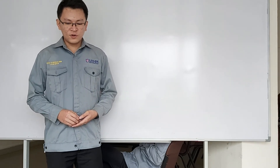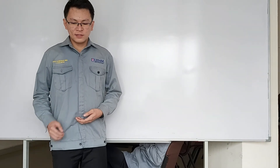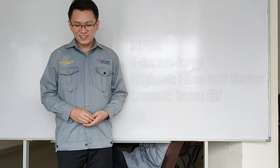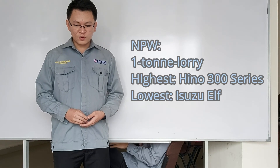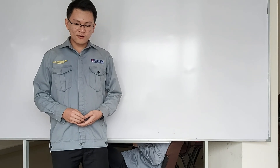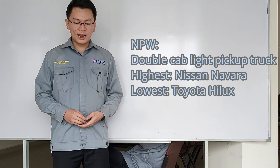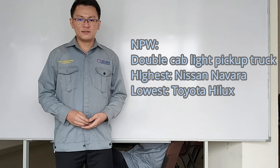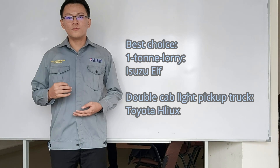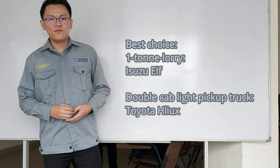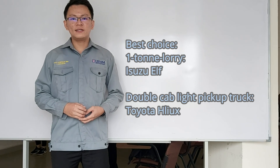For the NPW value, discrete compound interest factors are used to calculate the net present worth. Comparing the NPW values within the one-ton lorry category, the Isuzu with the lower NPW value is the suitable choice to buy for this project. For the double cab light pickup truck category, the Toyota Hilux is the recommended choice to buy in this project.